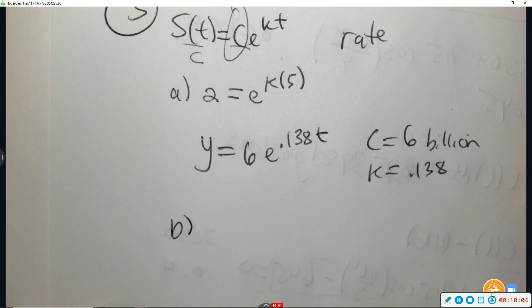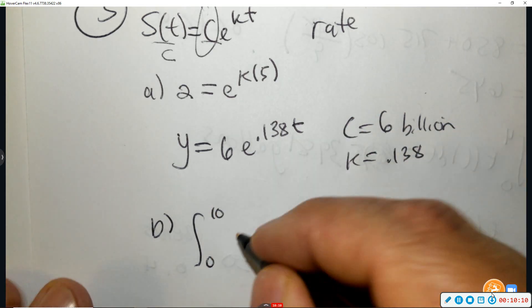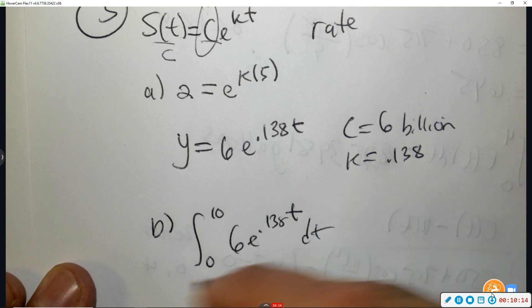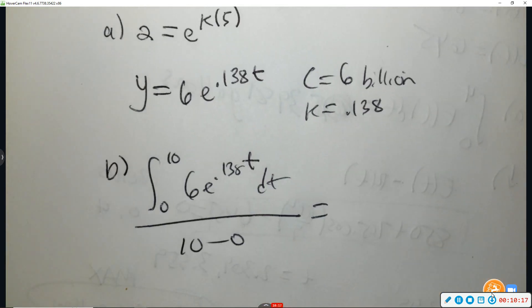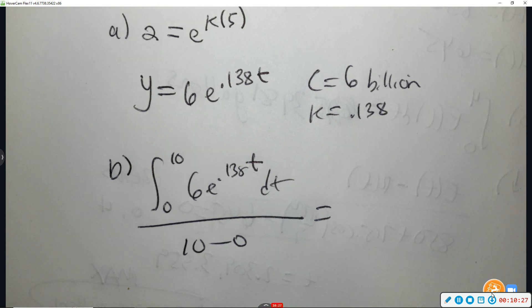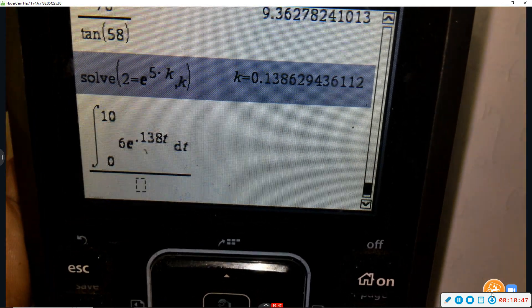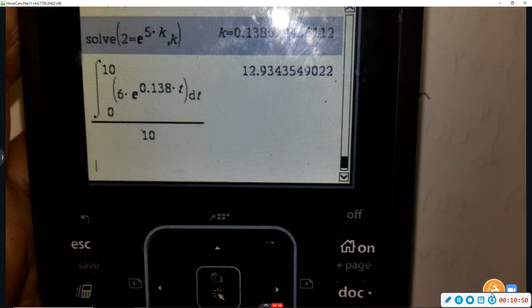Find the average rate of consumption of cola over a 10-year period. So then we're going to do average goes from 0 to 10 of that equation we just came up with, divided by 10 minus 0, or 10. So we're going to type that in our calculator. So do that with me. Integrate. And you get 12.934.